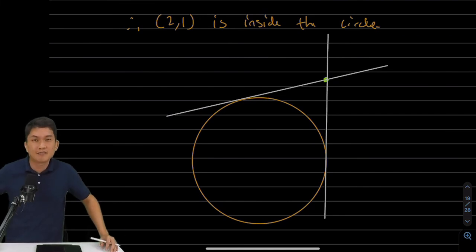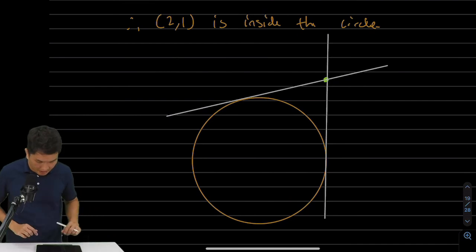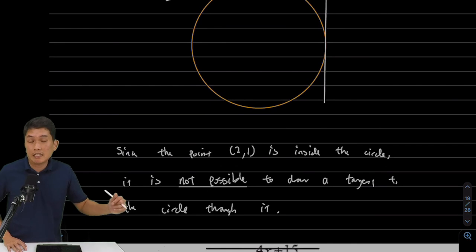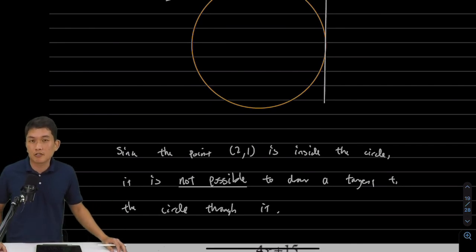So if I have a point inside the circle, my tangents will never touch that point. So we can definitely conclude from here and say that since the point (2, 1) is inside the circle, it is just not possible to draw a tangent that passes through that point.